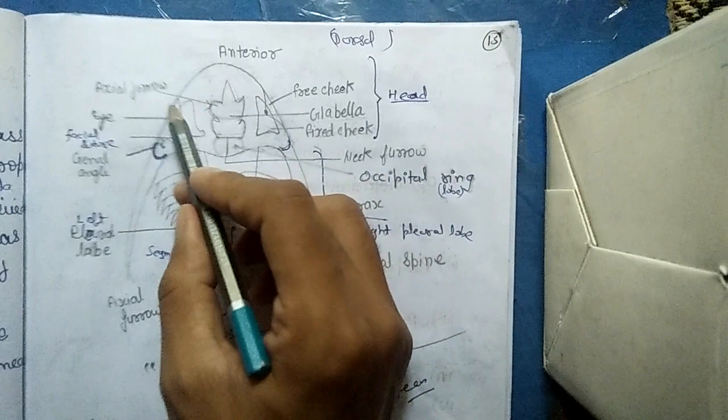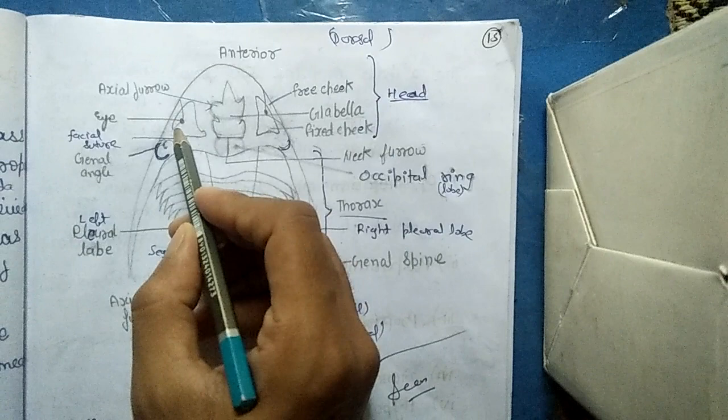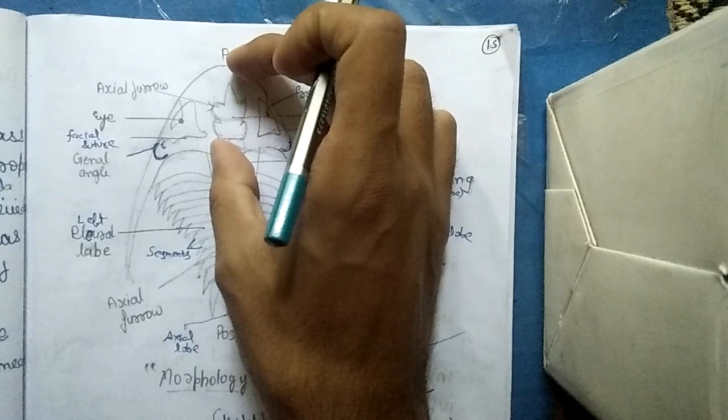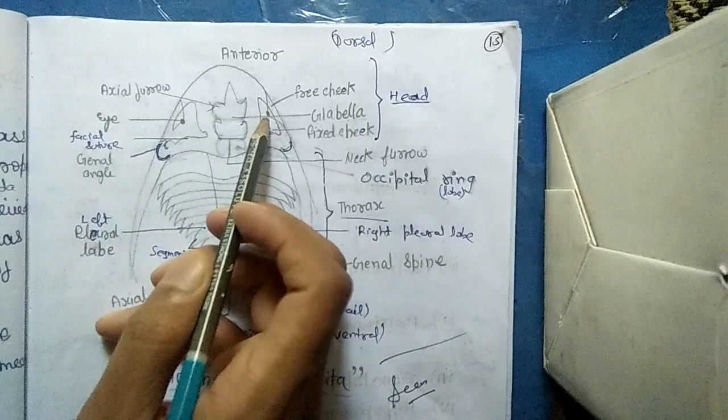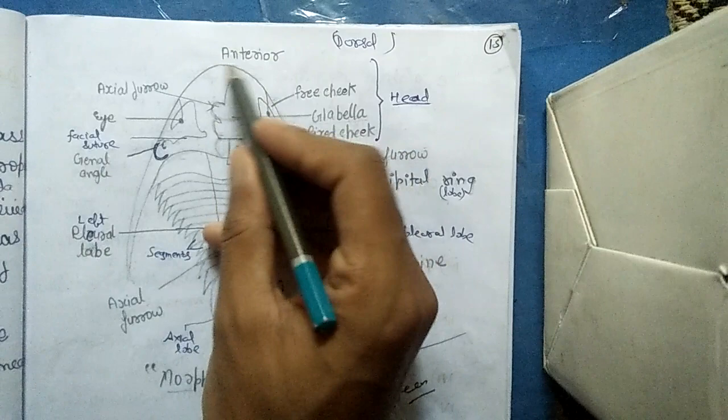This one is glabella and this all part coming head, this much part is head. These dotted things are eyes and these lines are facial sutures. This line is anterior margin and this line is posterior margin.